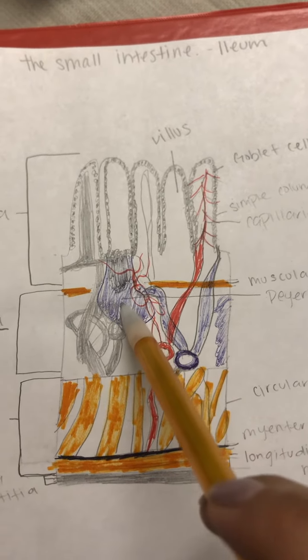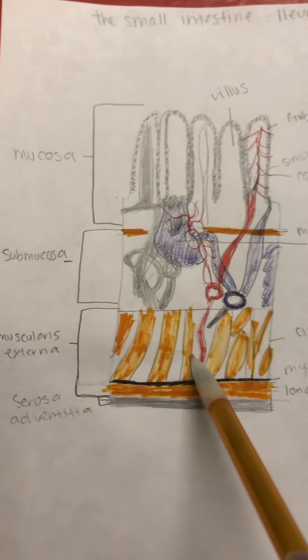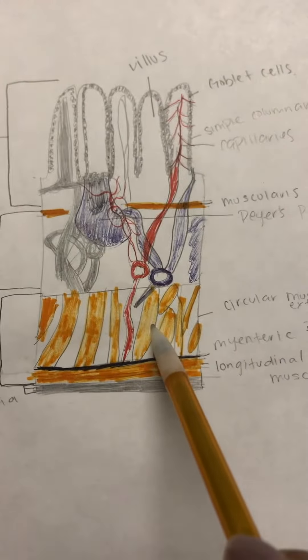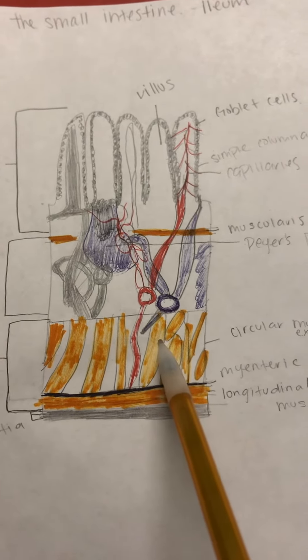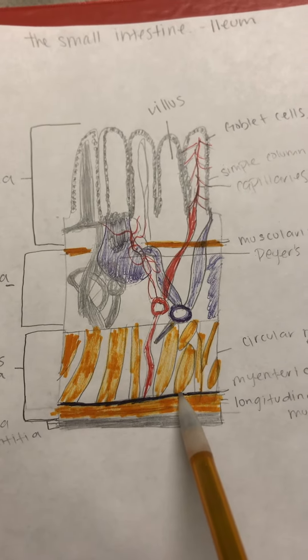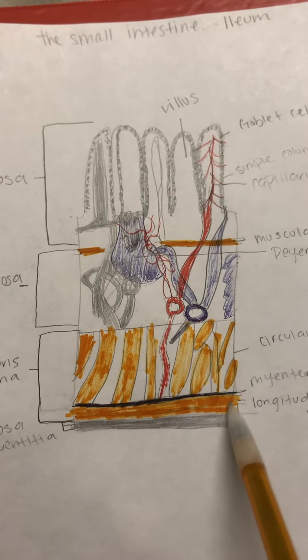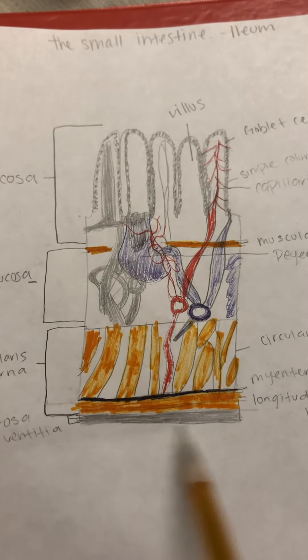This next section within the muscularis externa is the circular muscle of muscularis externa. This little section is the myenteric plexus and the longitudinal muscle of muscularis, and again the serosa.